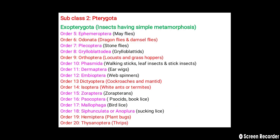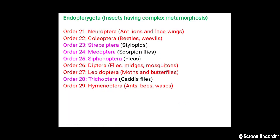The orders of Exopterygota include insects with simple metamorphosis. The orders of Endopterygota include: Neuroptera, Coleoptera, Strepsiptera, Mecoptera, Siphonaptera, Diptera, Lepidoptera, Trichoptera, and Hymenoptera. This concludes the classification of insects. Thank you.